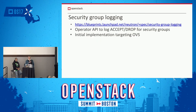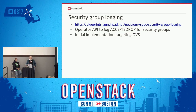Security group logging is starting out as a purely operator-based API. It will let operators define criteria to say: I want to log all packets, or log all instances where a packet reached a security group rule and was dropped or accepted. The initial implementation will only target the OVS reference implementation and will allow operators to log security events for sensitive devices.